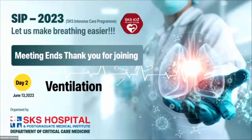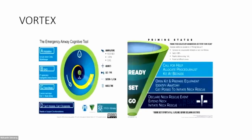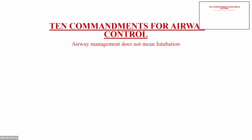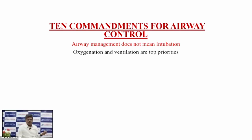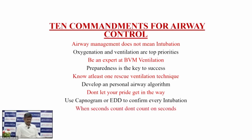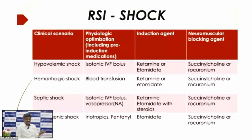The first recap is from Dr. Satya Prakash. The take-home message of this slide is: always try to be in the periphery of the vertex; don't fall deep into the vertex; call for help early; don't let it ride in the way of taking decisions. The 10 commandments for airway control: airway management does not mean intubation; oxygenation and ventilation are top priorities; be an expert in bag valve mask ventilation; preparedness is the key to success; know at least one rescue ventilation technique; develop a personal airway algorithm and do not let your pride get in the way. Use capnogram to confirm every intubation, and when seconds count, don't count on seconds. Practice airway management skills.